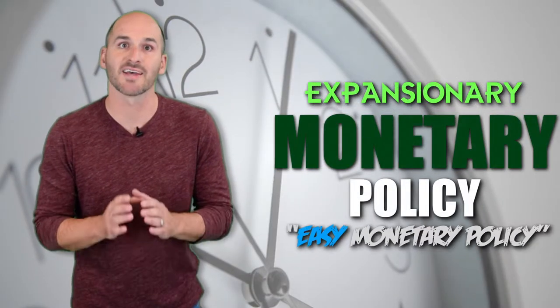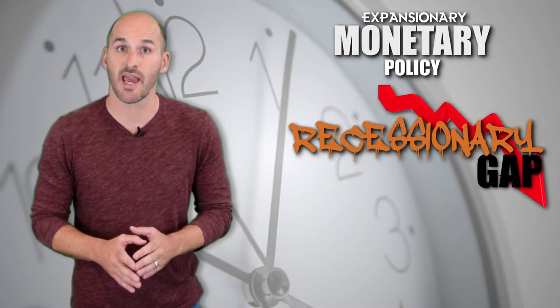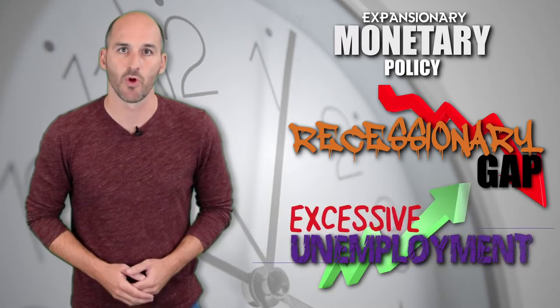Expansionary Monetary Policy is also known as Easy Monetary Policy. It's used when the economy is in a recessionary gap, and real GDP output is being produced at too slow a rate, causing excessive unemployment.